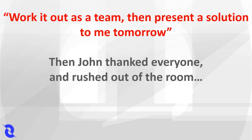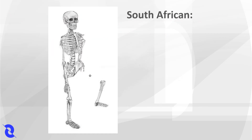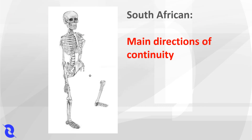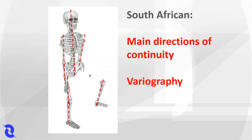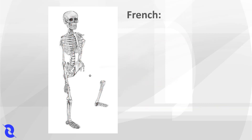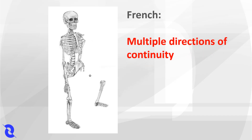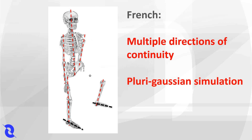Then John thanked everyone and rushed out of the room. South Africa looked at this: "Great, this is an easy one. The main directions of continuity are here. So we use variography to figure this out. So the solution is this." "Dandy, dandy, dandy. You're so old-fashioned. You've been doing this since the 1960s and you have no idea. There are multiple directions of continuity, as you can see here and also here. So we need to use clearly sequential Gaussian simulation. So the solution is this."